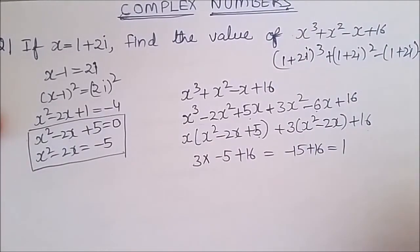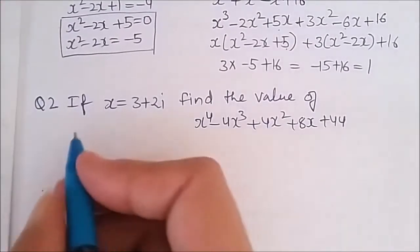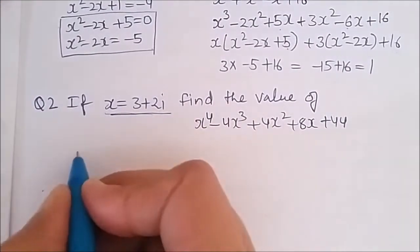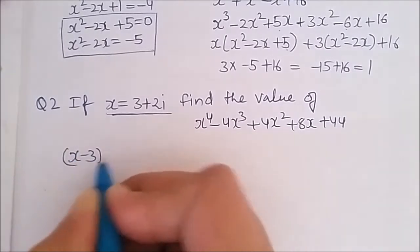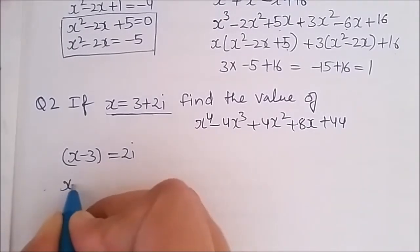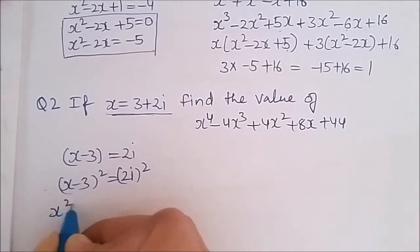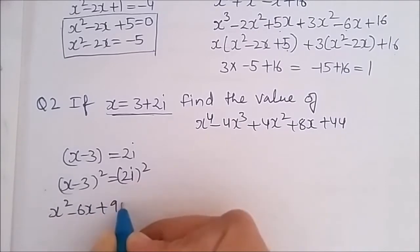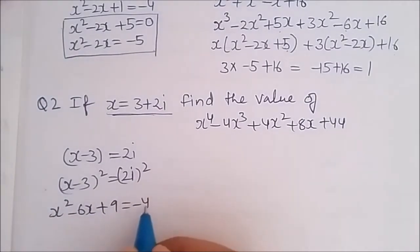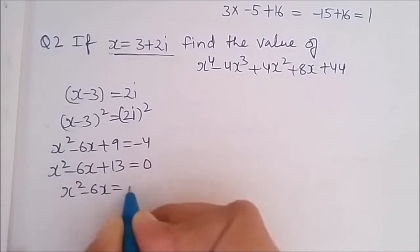Let us take one more example. From this expression I take x minus 3 to the left side and 2 iota to the right side, then square both sides: x minus 3 whole square equals 2 iota whole square. This gives x square minus 6x plus 9 equals minus 4. Taking minus 4 to the left side, this becomes x square minus 6x plus 13 equals 0, or x square minus 6x equals minus 13.